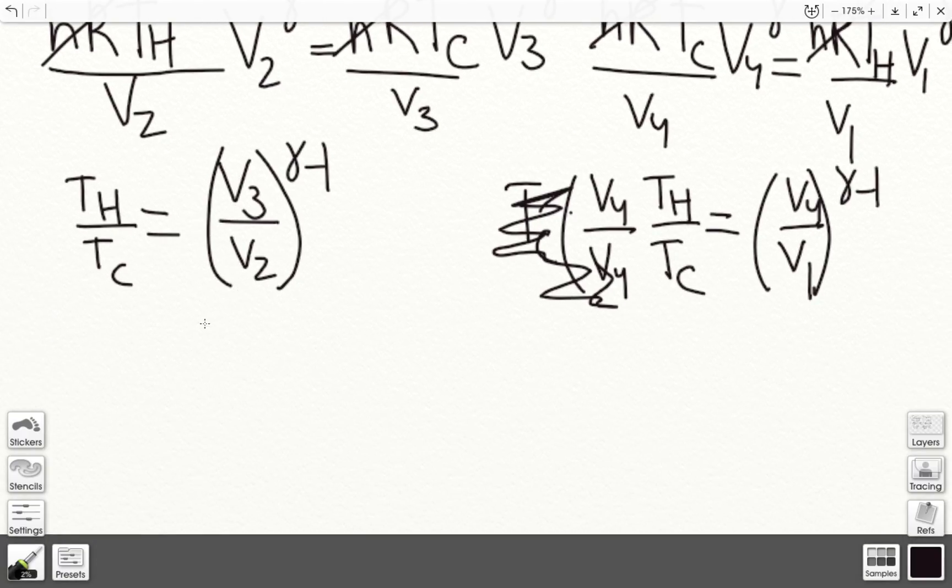So from doing that, as you can see, v3 over v2 is equal to, basically, Th over Tc equals this expression and this expression. So I can have this expression equal to this expression. If I get rid of the exponents on both sides, I have v3 over v2 is equal to v4 over v1.